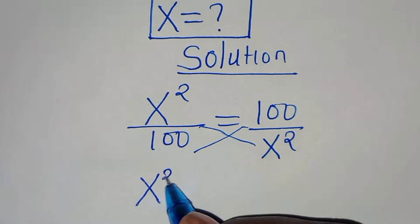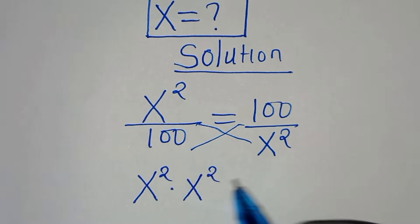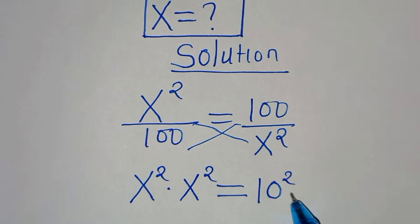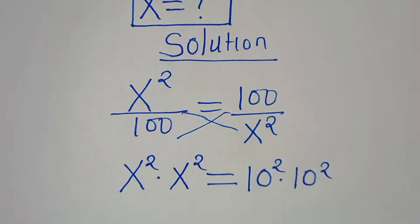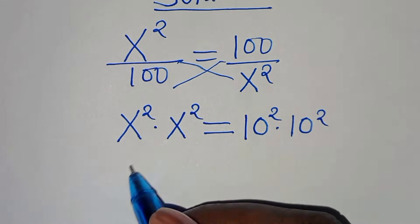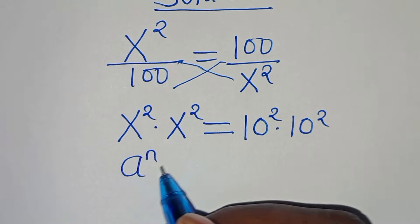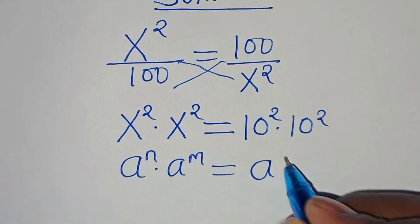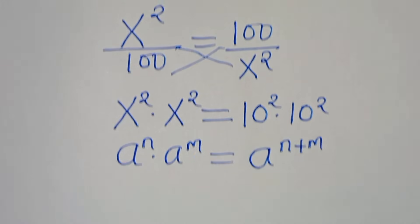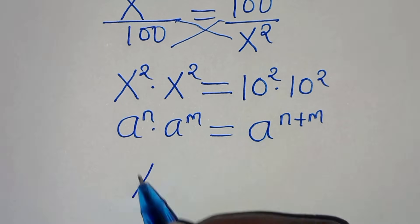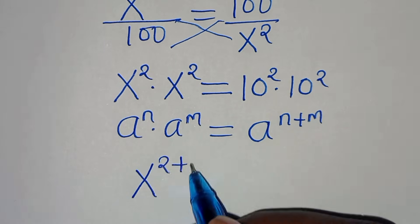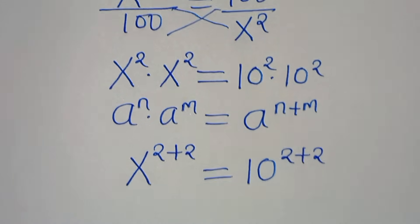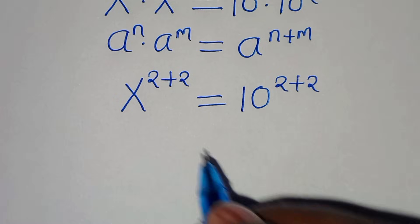Now let's cross multiply, so that we have x to the power of 2 multiplied by x to the power of 2, this is equal to 100 which is 10 to the power of 2 times 10 to the power of 2. This is in the form of a to the power of n times a to the power of m, which we can express as a to the power of n plus m. Applying this exponent property, we have x to the power of 2 plus 2, this is equal to 10 to the power of 2 plus 2. So we have x to the power of 4.